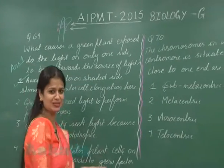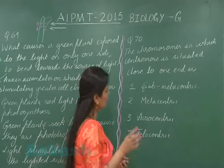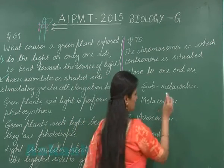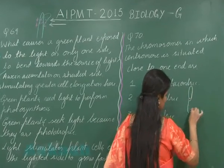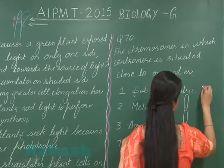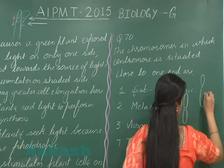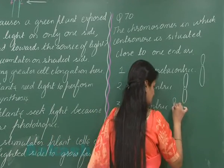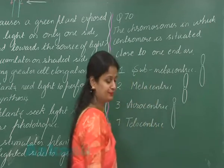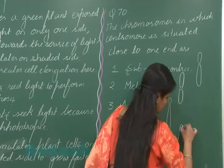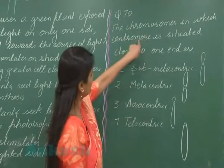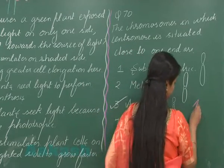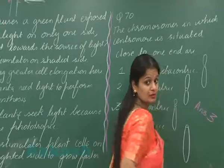Question number 70 is about distinguishing chromosomes on the basis of centromere position. In metacentric chromosomes, the centromere is present in the center. In sub-metacentric, the centromere is near the center. In acrocentric, the centromere is present near the end. In telocentric, the centromere is at the end. So the chromosome in which the centromere is situated close to one end is acrocentric, and the right option is option number three.